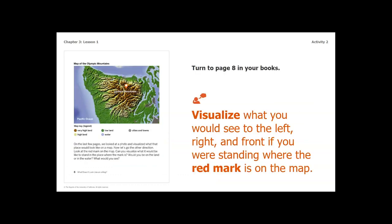We're going to look at page eight and visualize what you would see to the left, right, and in front of you if you were standing where the red mark is on the map. On the last few pages we looked at a photo and visualized what the place would look like on a map — now let's go the other direction. Look at the red mark on the map. Would you be on the land or in the water? What would you see? I want you to just take a second to think about if you were standing there, what would you see?